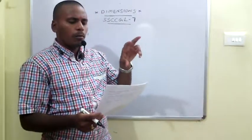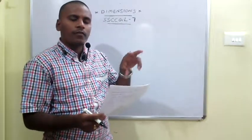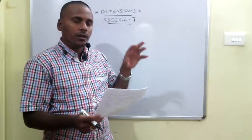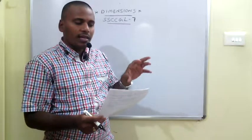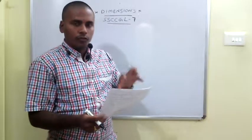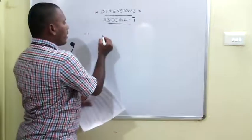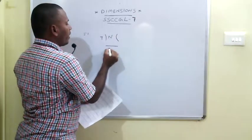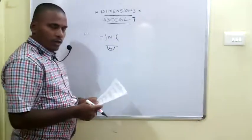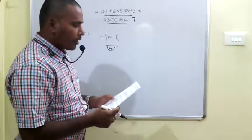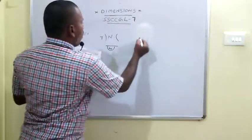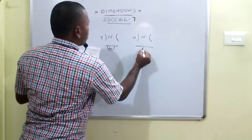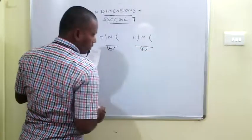When I distribute a certain number of chocolates to 7 students, I am left with 4 chocolates. That means, if the number of chocolates is n, when n is divided by 7, the remainder is 4. That is the first statement. For the second statement, when I divide n by 11, I am left with a remainder of 6 chocolates.